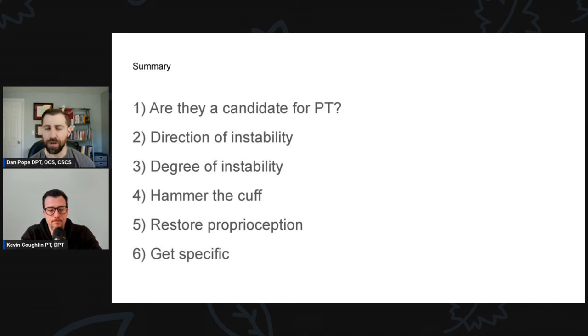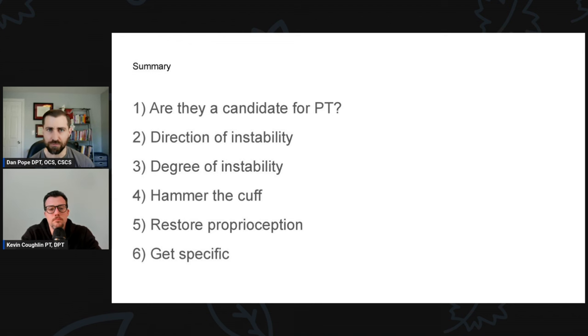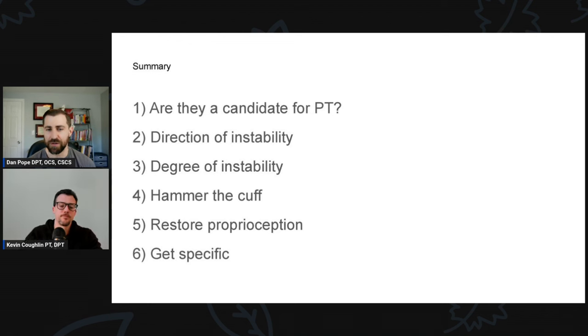We're going to go over six keys. Number one: are they actually a candidate for physical therapy? Number two: the direction of instability, which is going to dictate the exercise you choose. Number three: the degree of instability, which will also dictate where you start your exercise and how hard you push them. Number four: the rotator cuff — that's very important for these folks. Number five: restoring proprioception, one of the big things folks lose after shoulder instability and dislocation. And lastly, number six: getting specific — returning back to sport or whatever activity that individual wants to get back to.